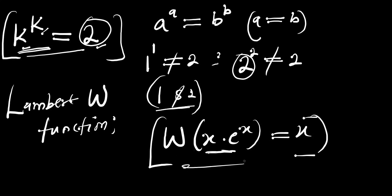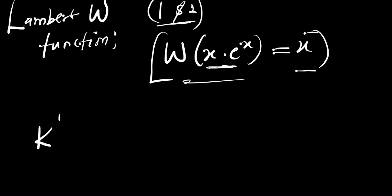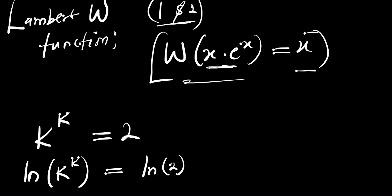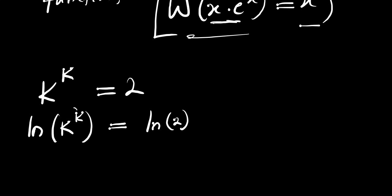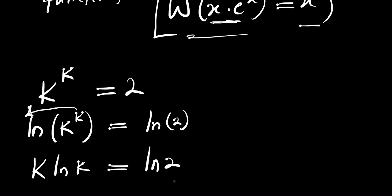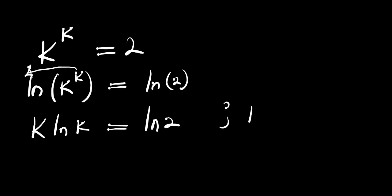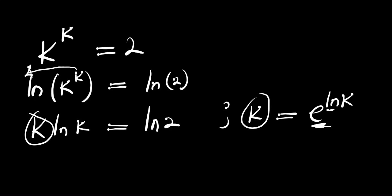Let's recall the problem: we have k to the power of k and this equals 2. The next step is to take the natural log — we have ln of k to the power of k, and this equals ln of 2. This k comes down in front: we have k times ln of k, and this equals ln of 2. We can express k as e to the power of ln of k, and we replace this k with e to the power of ln of k, giving us e to the power of ln of k, times ln of k, equals ln of 2.